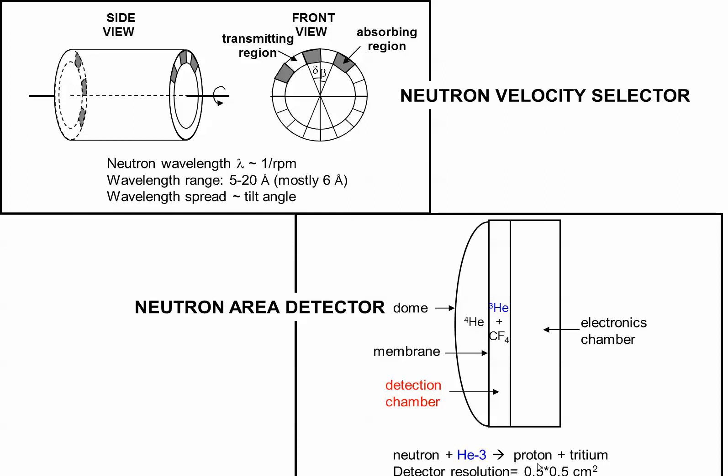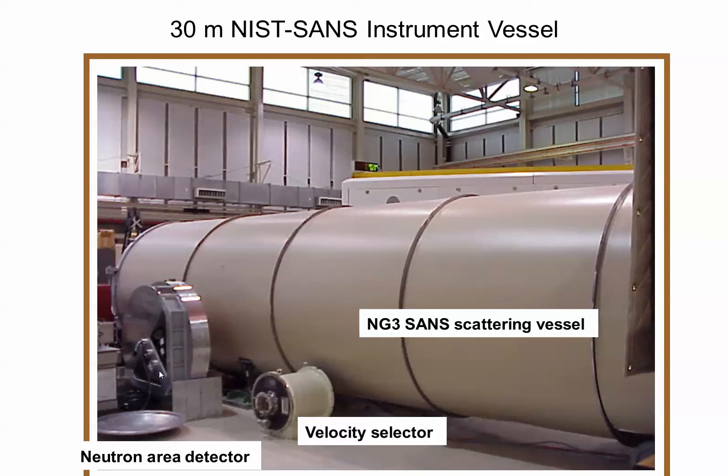Area detector, using nuclear reaction. Neutrons get absorbed in helium-3, gives two charged particles, which with a voltage get detected as a detection cloud and so on.